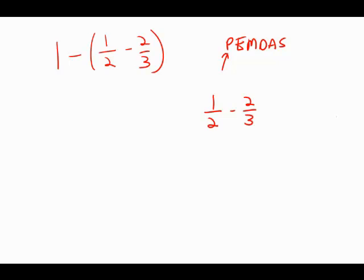One-half minus two-thirds. Well, the way we do this is to find a common denominator. Multiply two by three over three. Multiply the two-thirds by two over two.